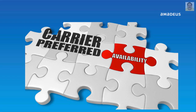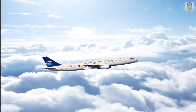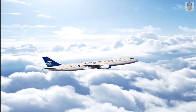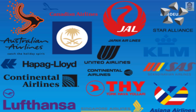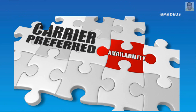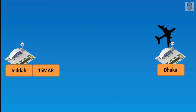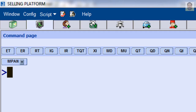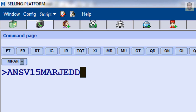The carrier preferred display shows flights that the airline has chosen to display for the route you specify, such as its own flights or flights of partner airlines. The display can also include flight connections or routings not normally shown on a neutral availability display due to long elapsed flying times or excessive mileage. This is useful when the customer wants to travel only on a selected airline. For example, departure from Jeddah to Dhaka on March 15 by Saudi Arabian Airlines: enter AN, airline two-letter code SV, departure date March 15, city or airport pair Jeddah to Dhaka.